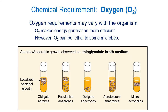Oxygen is a building block of many macromolecules, so all living things contain some oxygen. But free diatomic gaseous oxygen is poisonous to many microbes — these are anaerobes. In this example, microbes are growing within a broth containing thioglycolate, which absorbs oxygen and makes it unavailable — good media for growing anaerobic bacteria. In the first tube, cells clustered at the top are obligate aerobes that require oxygen and cannot live without it.